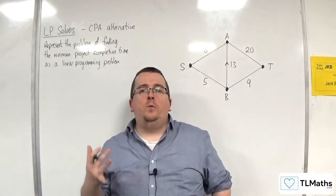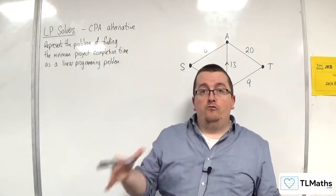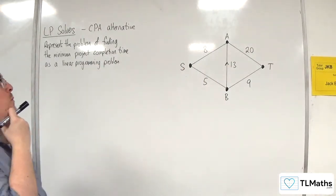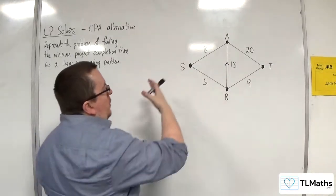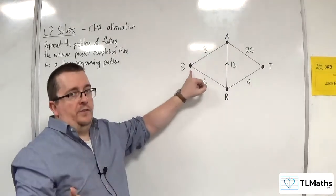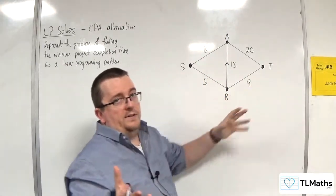When we do critical path analysis, you are essentially finding the longest path through the network. Let's say we wanted to do critical path analysis on this network here, where S is the first event and T is the final event.